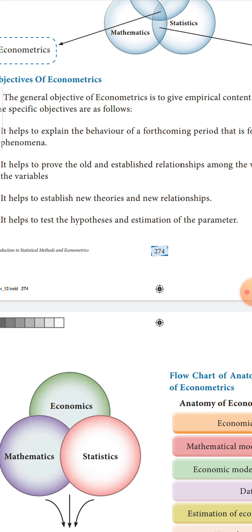It helps to test hypotheses and estimate parameters. Hypothesis means a proposed explanation made with limited evidence or limited facts — it is the starting point of further investigation. When you want to take up a future study about a problem, initially you make some hypothesis with limited information. Econometrics helps to test these hypotheses and estimate whatever parameters are taken for consideration. These are the four objectives of econometrics.